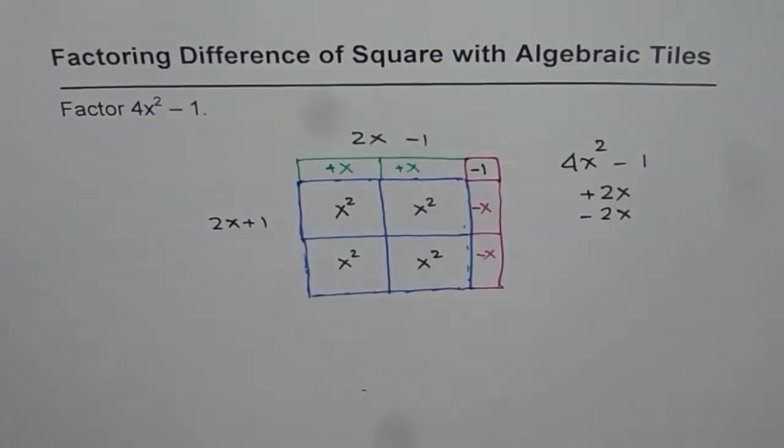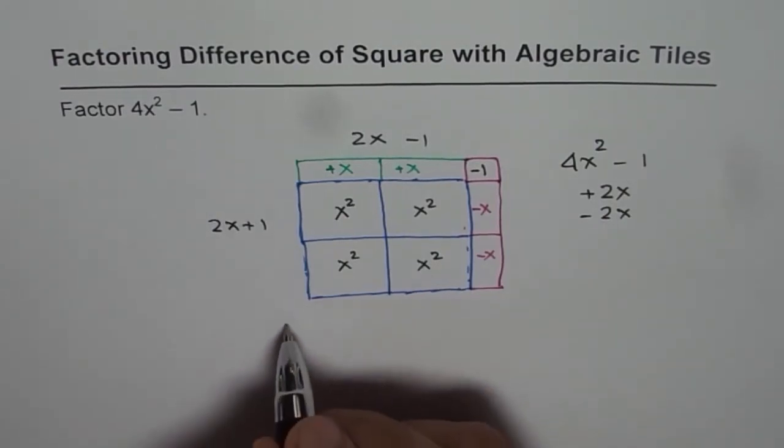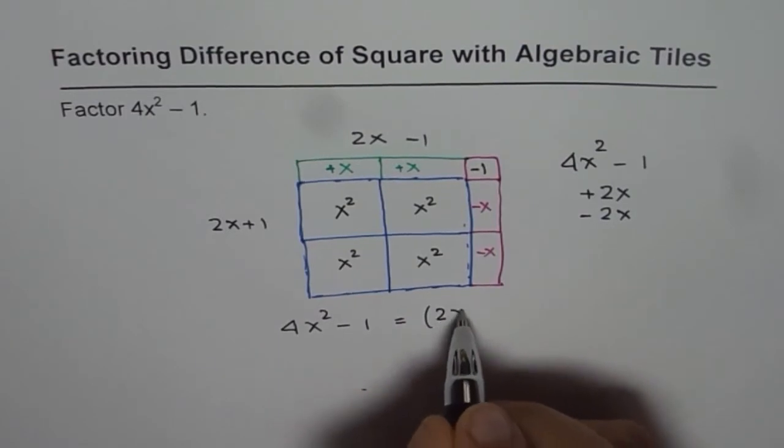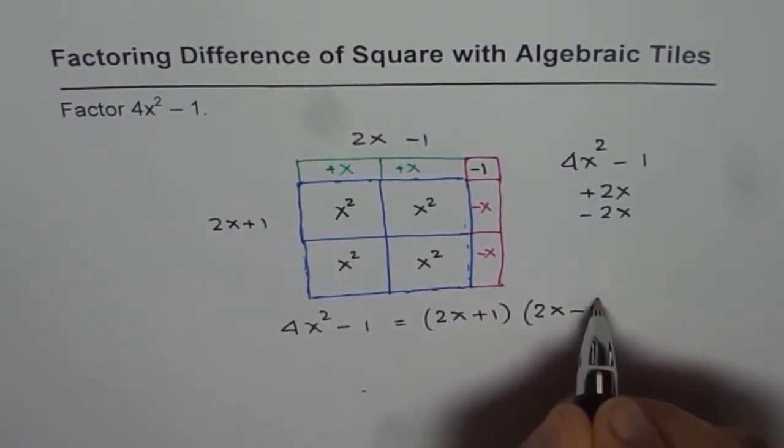Correct. So these dimensions form the factors of 4x² minus 1. We can now write 4x² minus 1 as equal to (2x plus 1) times (2x minus 1).